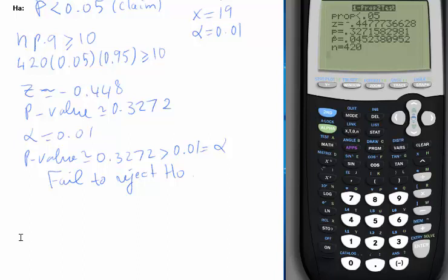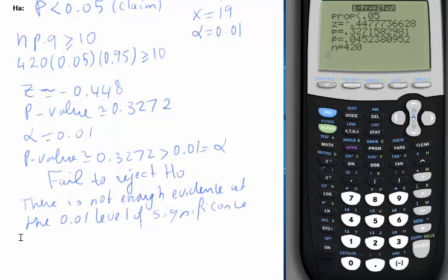And now we need to interpret our decision in the context of the claim. If you fail to reject H0 and the claim is in Ha, you cannot support the claim. So you say there is not enough evidence at the 0.01 level of significance to support the airline's claim that the percent of no show is less than 5%.